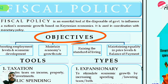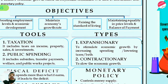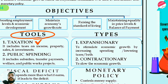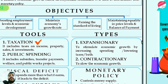The tools of fiscal policy are taxation and public spending. Taxation includes direct taxes like income tax, property tax, and wealth tax, as well as indirect taxes like sales tax, value added taxes, and GST.